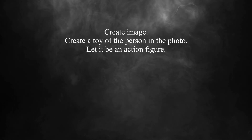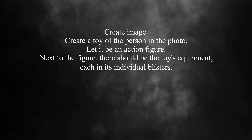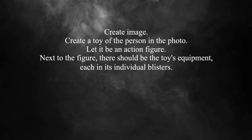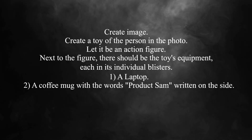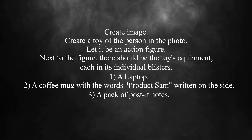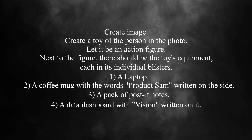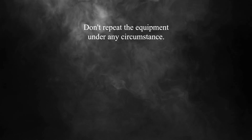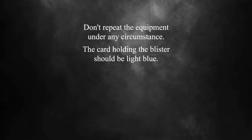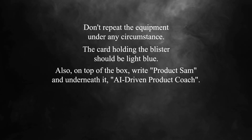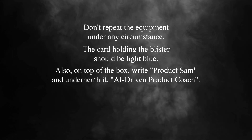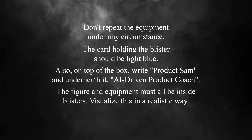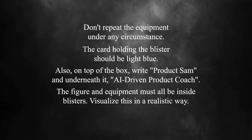Create a toy of the person in the photo. Let it be an action figure. Next to the figure there should be the toy's equipment, each in its own individual blisters: one, a laptop; two, a coffee mug with the words 'Product Sam' written on the side; three, a pack of post-it notes; four, a data dashboard with 'vision' written on it. Don't repeat the equipment under any circumstance. The card holding the blister should be light blue. Also on top of the box write 'Product Sam' and underneath it 'AI driven product coach.' The figure and equipment must all be inside the blisters. Visualise this in a realistic way.